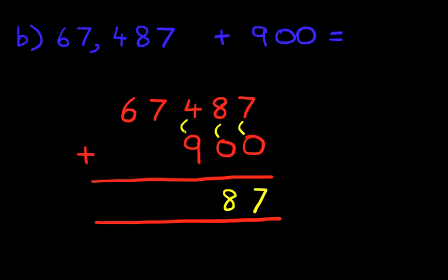The hundreds column, what is 4 plus 9? It's the same as 9 plus 4. That's right, it is 13. So let's put 1 here. And let's put 3 here.